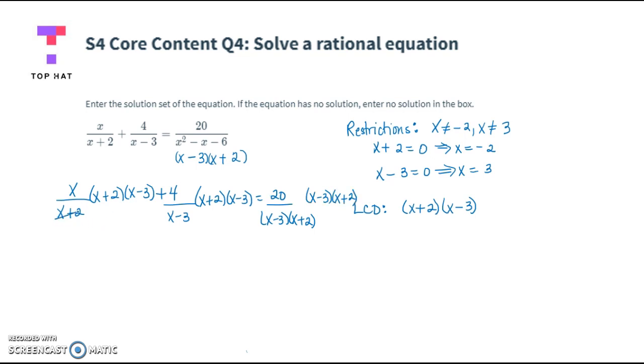And in so doing, the first term has a common factor of x plus 2. So we multiply the x times x minus 3, which gives us x squared minus 3x. In the middle term, the x minus 3s divide out. We're left with 4 times x plus 2, which is 4x plus 8. And on the right, both of those factors are common, so we're just left with 20.